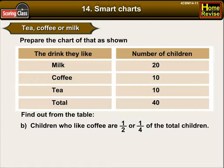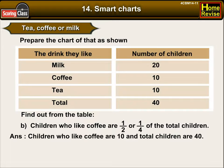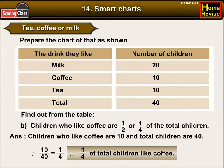B: Are children who like coffee half or one-fourth of the total children? Children who like coffee are ten, and the total number of children are forty. Therefore, ten upon forty is one upon four, which means one-fourth of total children like coffee.